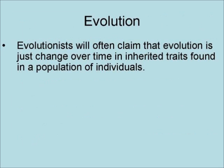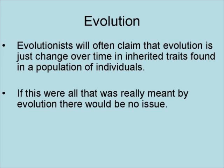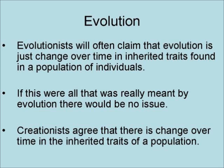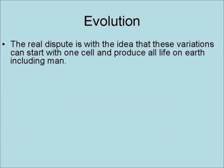Evolutionists will claim that evolution is just change over time in inherited traits found in a population of individuals. If this were all that was really meant by evolution, there would be no issue, because creationists agree that there is change over time in the inherited traits of a population. The real dispute is with the idea that these variations can start with one cell and produce all life on Earth, including man.